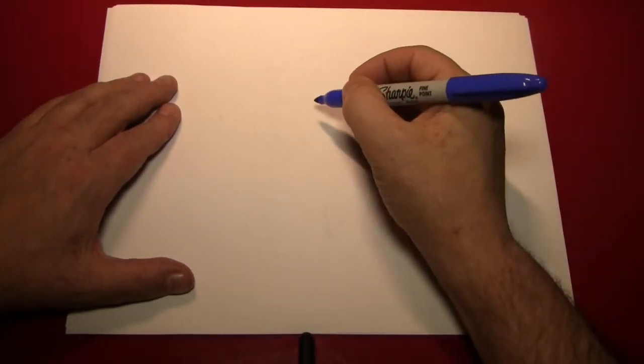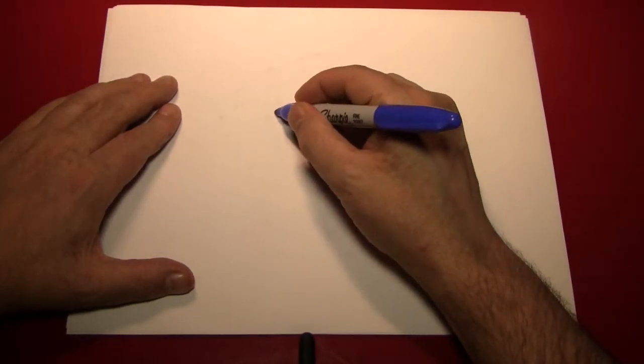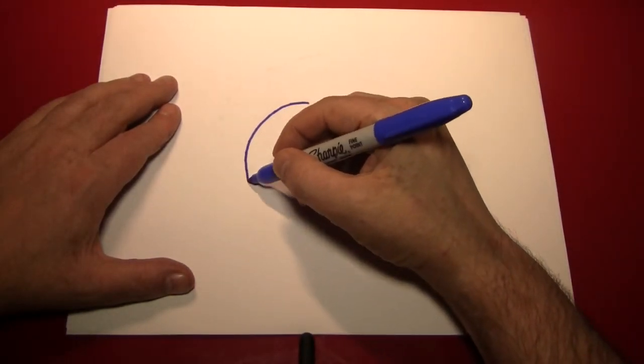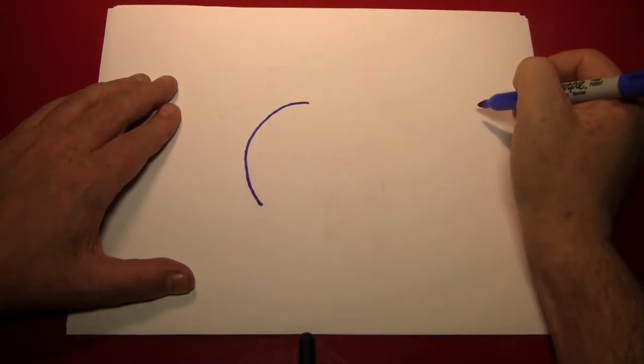The first thing we're going to need is the skull shape. We'll start at the top here and make a big curved line around to the left. Not a full semicircle, just about that much.